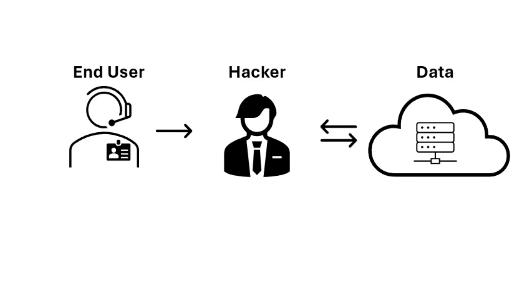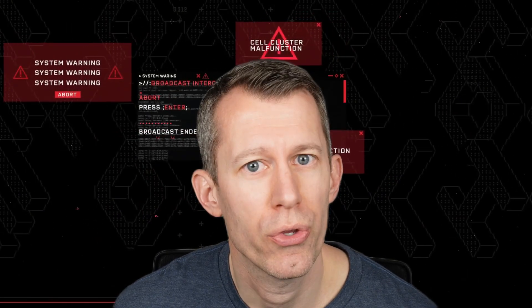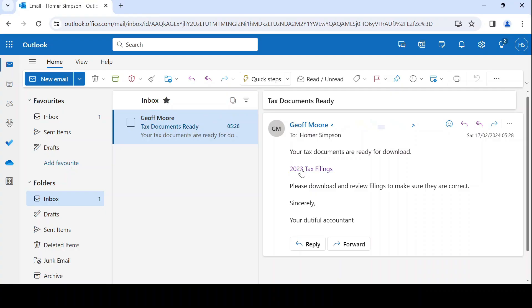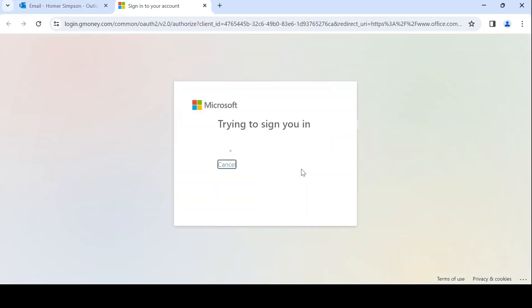Just as the name implies, an adversary in the middle attack is where a third party places themselves in between you and the service you typically use. Let's walk through a typical example from the victim's perspective. These attacks typically start with a phishing attempt — a user clicks on a link thinking that they're going to the document or website referenced in the email.